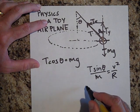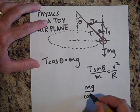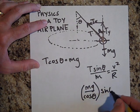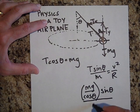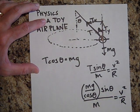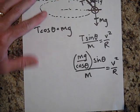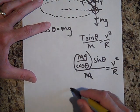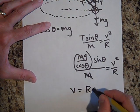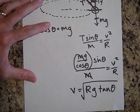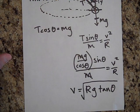Substituting T = mg/cos(θ) — just like the banked turn — gives v²/r = (mg/cos(θ))·sin(θ)/m. Canceling the m's and rearranging, v = √(rg·tan(θ)). Simple physics for something that at first looks pretty complicated. Thanks for listening.